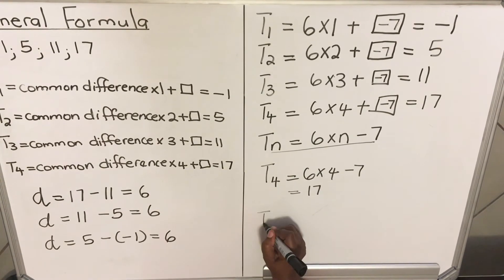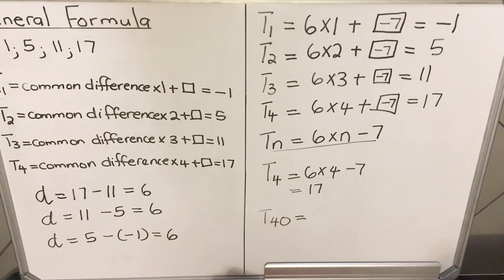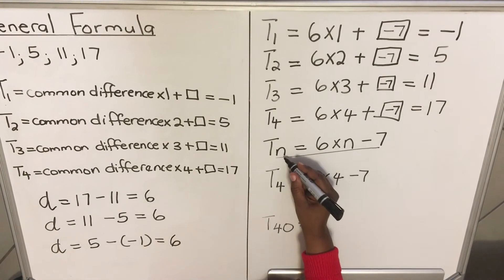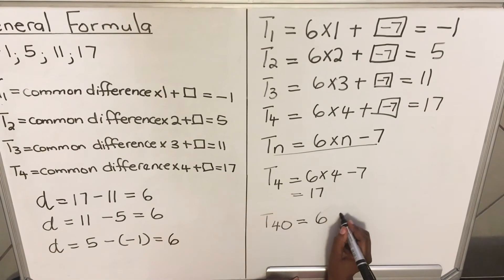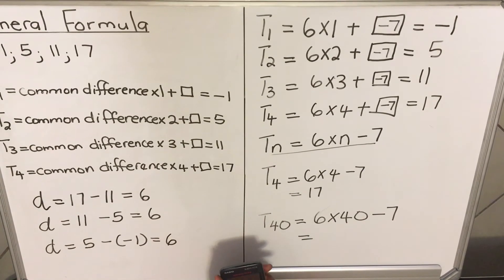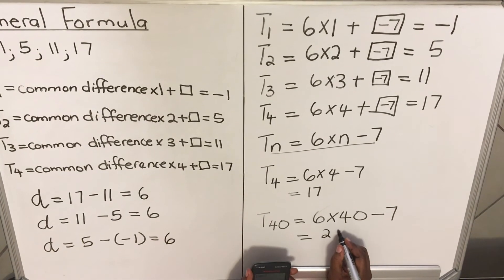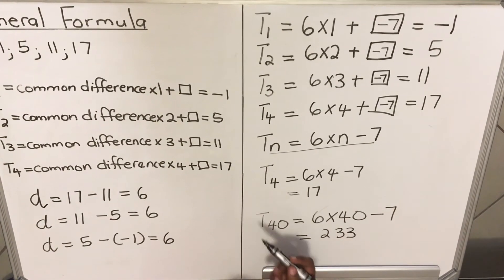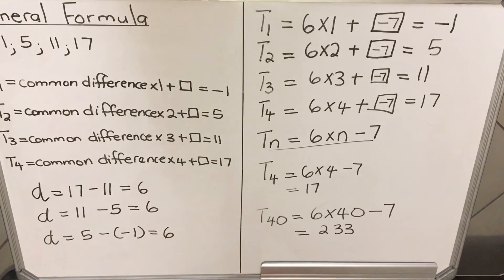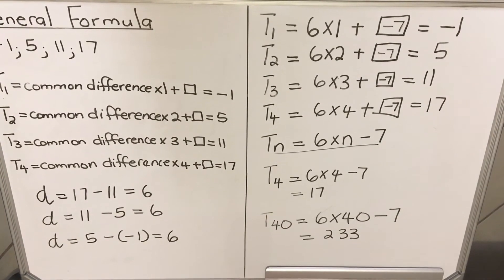Why do you need the general formula? So you can find any term in the sequence. If they ask for Term 40, you don't need to write all 40 terms. Use the formula: T40 = 6 times 40 minus 7, which gives 233. So the 40th term in this sequence is 233.